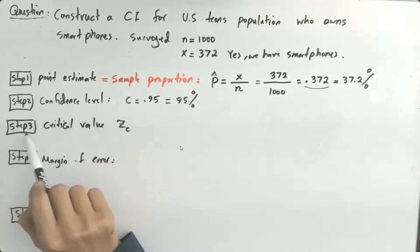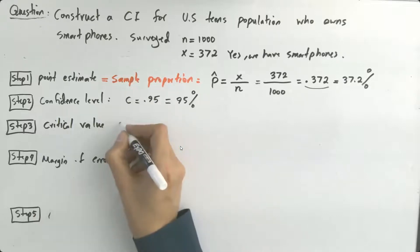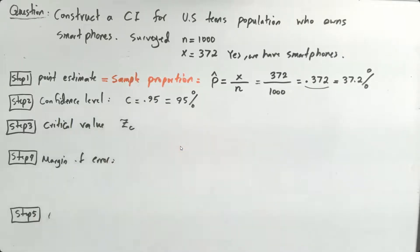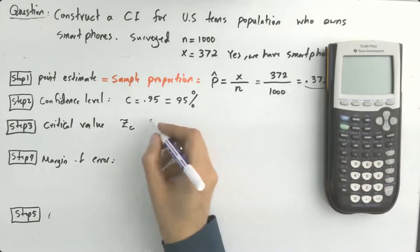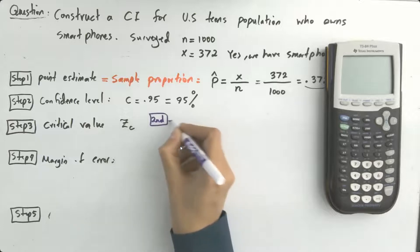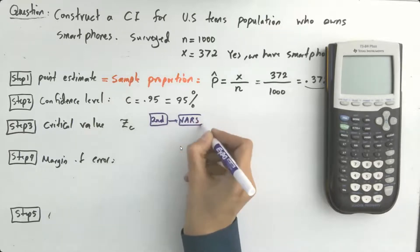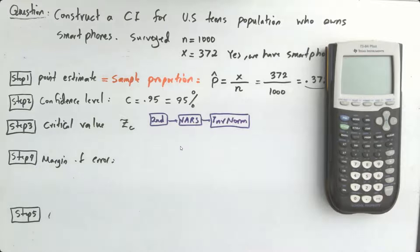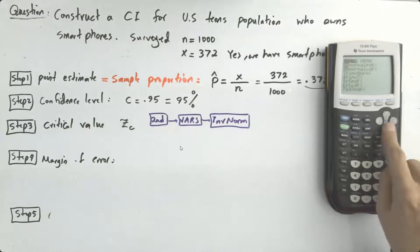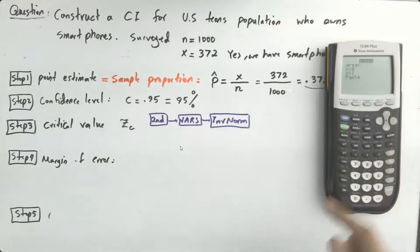We are done with step one. We're done with step two, thank you Chloe. Let's move on to calculate the critical value, step three. What is my critical value? What is z sub c? Well, I'm going to use my calculator, calculator to the rescue. I'm going to go to second, I'm going to go to vars, and then inverse norm.